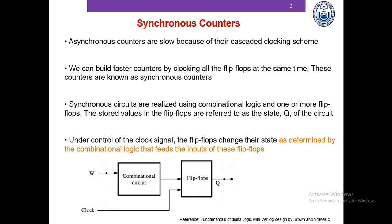Synchronous circuits are realized using combinatorial logic, as shown here, and one or more flip-flops. The stored value in the flip-flops is referred to as the state Q of the circuit, and under the control of the clock signal shown here, the flip-flops change their state as determined by the combinatorial logic that feeds the inputs to these flip-flops.